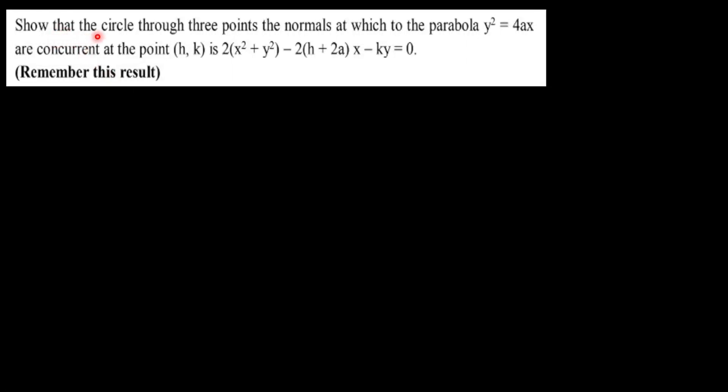Our today's question is: show that the circle through the three points on the parabola y² = 4ax, at which the normals are concurrent at the point (h, k). From the three points we draw normals meeting at the single point (h, k), and we need to prove the equation of the circle passing through those three points.